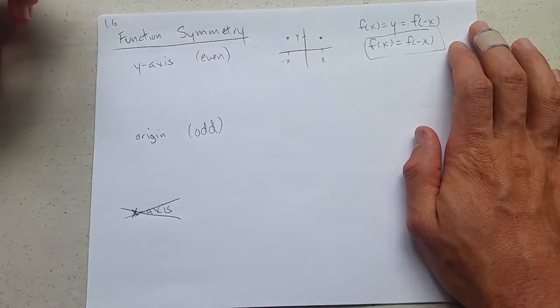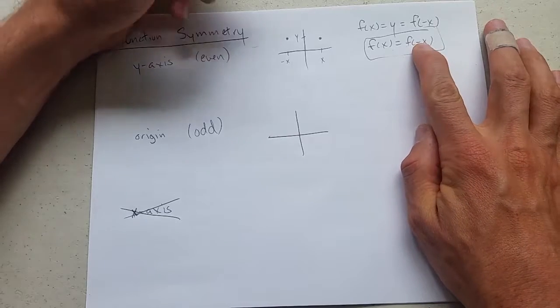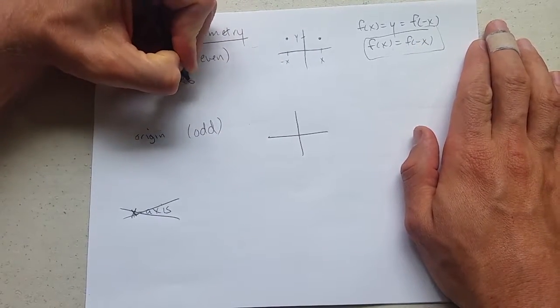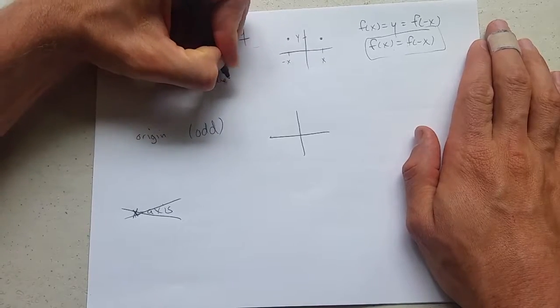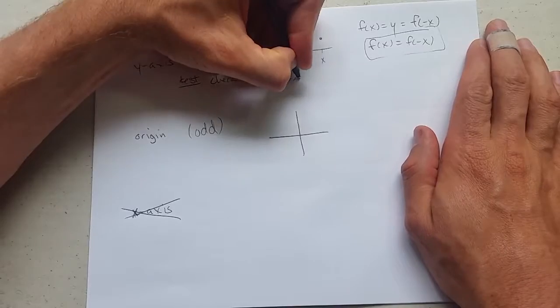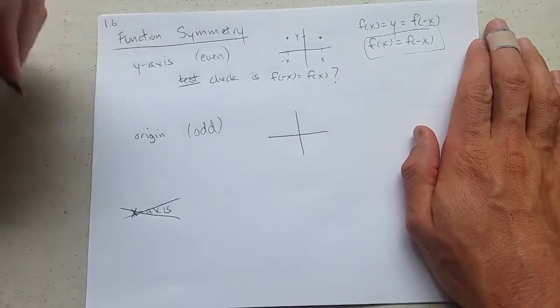Origin symmetry - I should mention testing first. I'll talk about that in a minute. All you have to do is check if f of negative x equals f of x. If it is, you have y-axis symmetry.